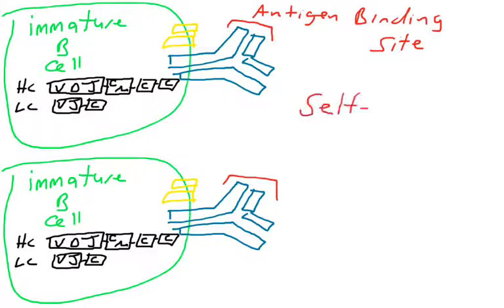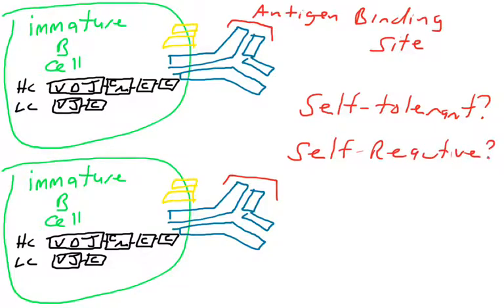At this point, we need to ask, will these B cells react to our own molecules? Are these self-reactive B cells? Because if these antigen binding sites bind to self proteins, then those B cells are going to attack us and we don't want that to happen.